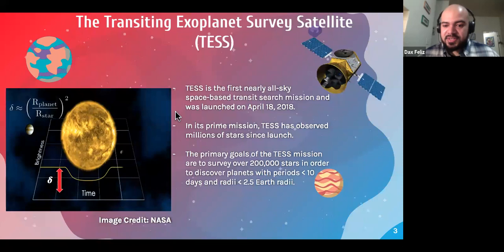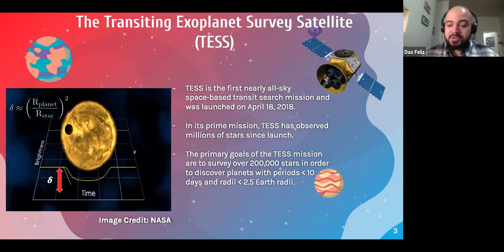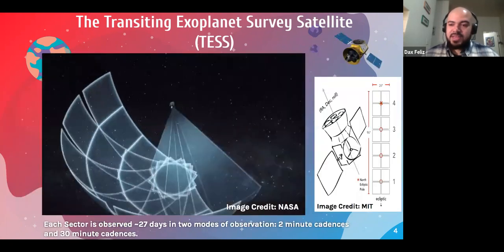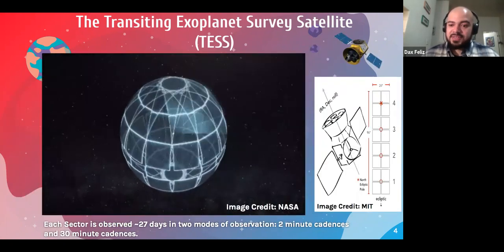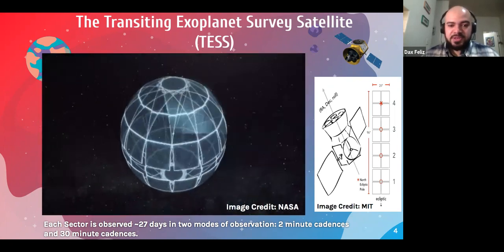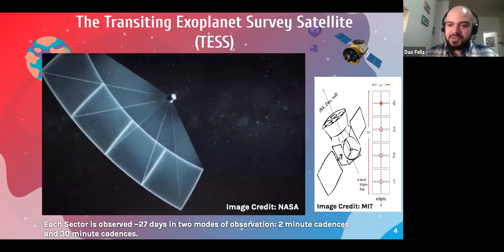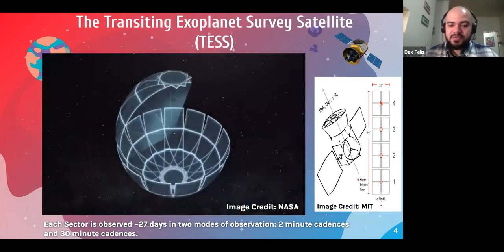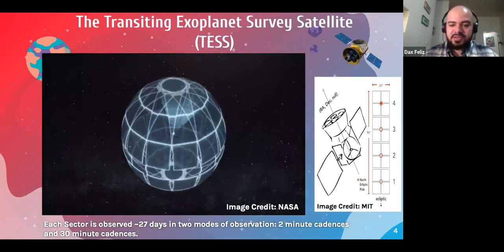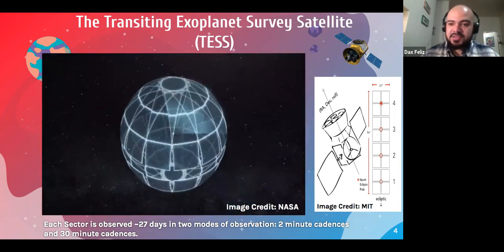One of the primary missions of the TESS mission was to survey over 200,000 stars in order to discover planets that have orbital periods less than 10 days and planet radius less than 2.5 Earth radii. So the way that the satellite scans the sky is it has four cameras situated on top of each other, and it observes the sky in two hemispheres, one in the south and one in the north. The way it splits up these hemispheres are into 13 sectors, where each sector is observed for 27 days. And it observes these stars in these sectors in two modes of observation, one in cadences of every two minutes, and one in cadences of every 30 minutes.